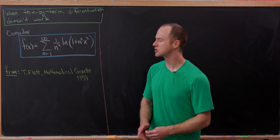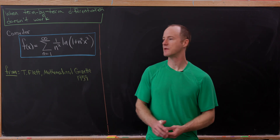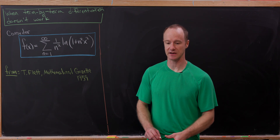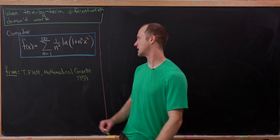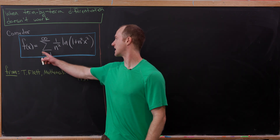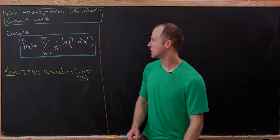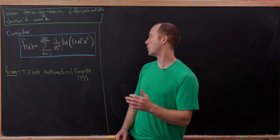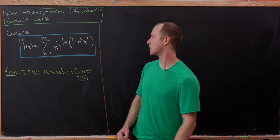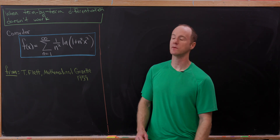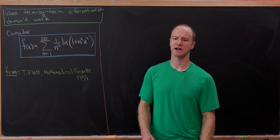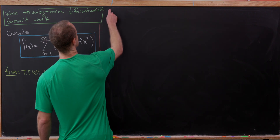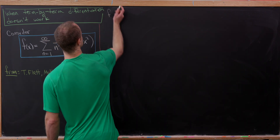This is from a short article in the Mathematical Gazette from 1959. The function that we're looking at is defined as the sum as n goes from 1 to infinity of 1 over n squared times the natural log of 1 plus n squared x. We might really want to think of this as the limit of a sequence of functions.